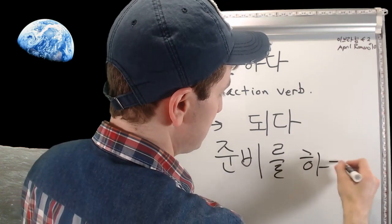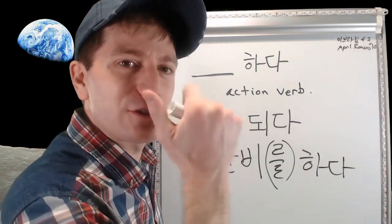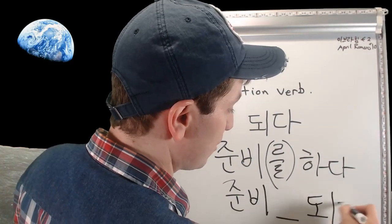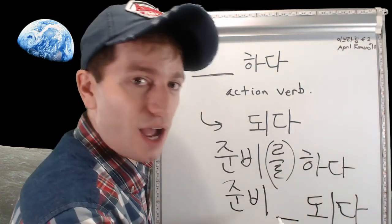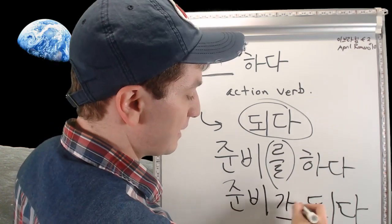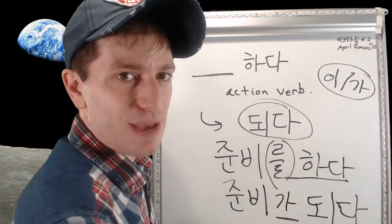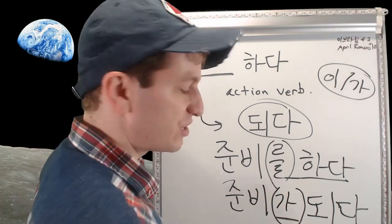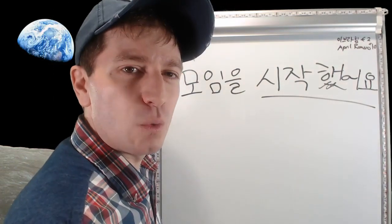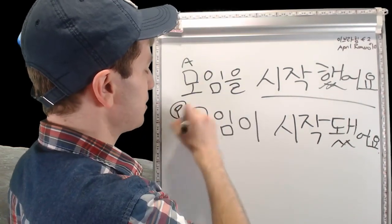For example, 준비하다 — 준비를 하다 means 'to prepare.' The passive form would be 'to be prepared,' so you say 준비되다. The 하다 goes away and changes to 되다, and the object marker changes to the subject marker 이/가. For instance: 저는 모임을 시작했어요 (I started the meeting — active) becomes 모임이 시작됐어요 (The meeting was started — passive). So the first is active voice and the second is passive voice.